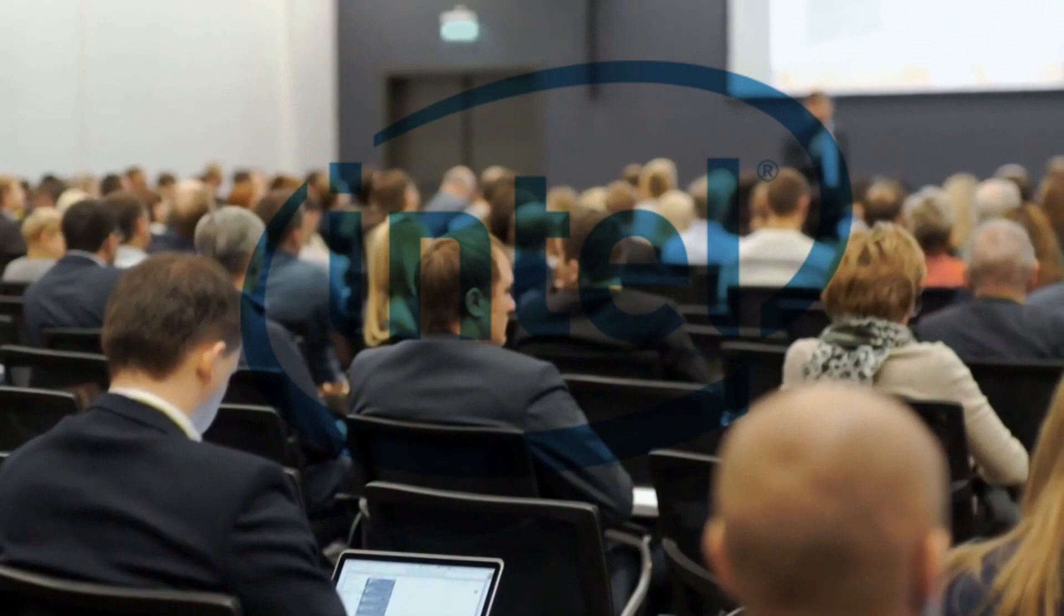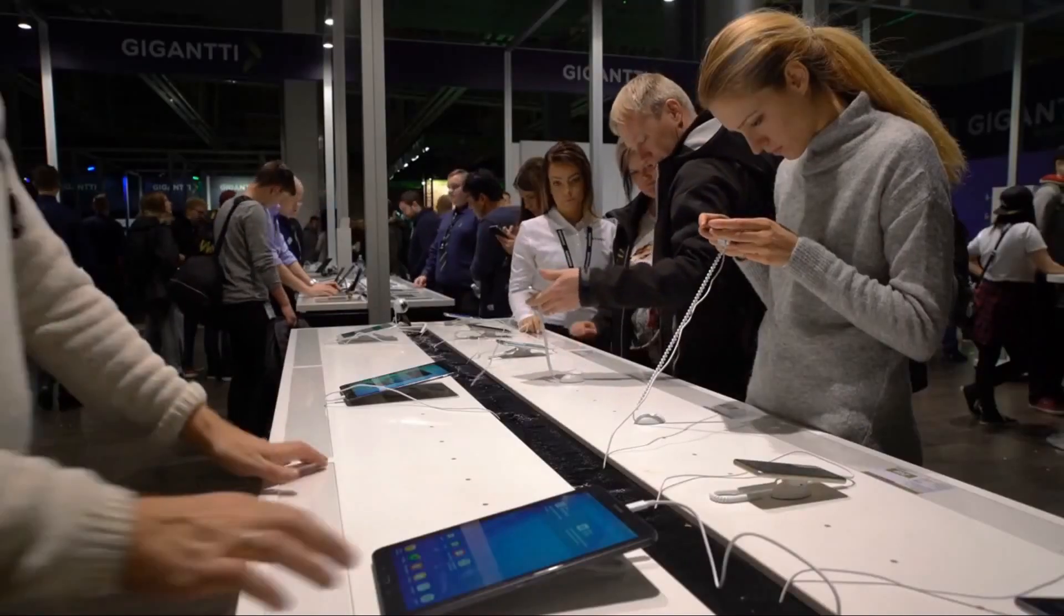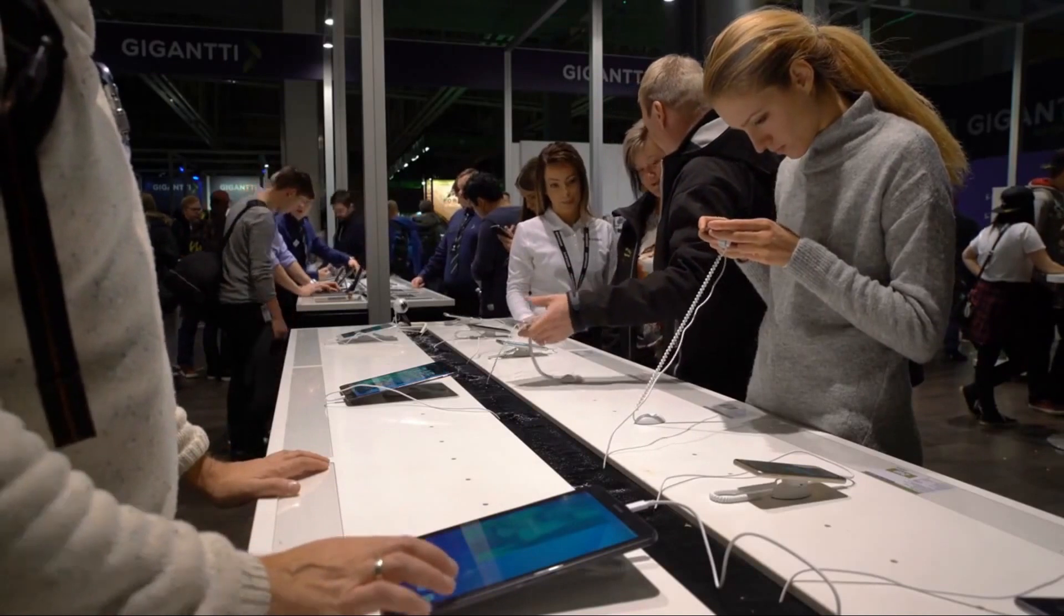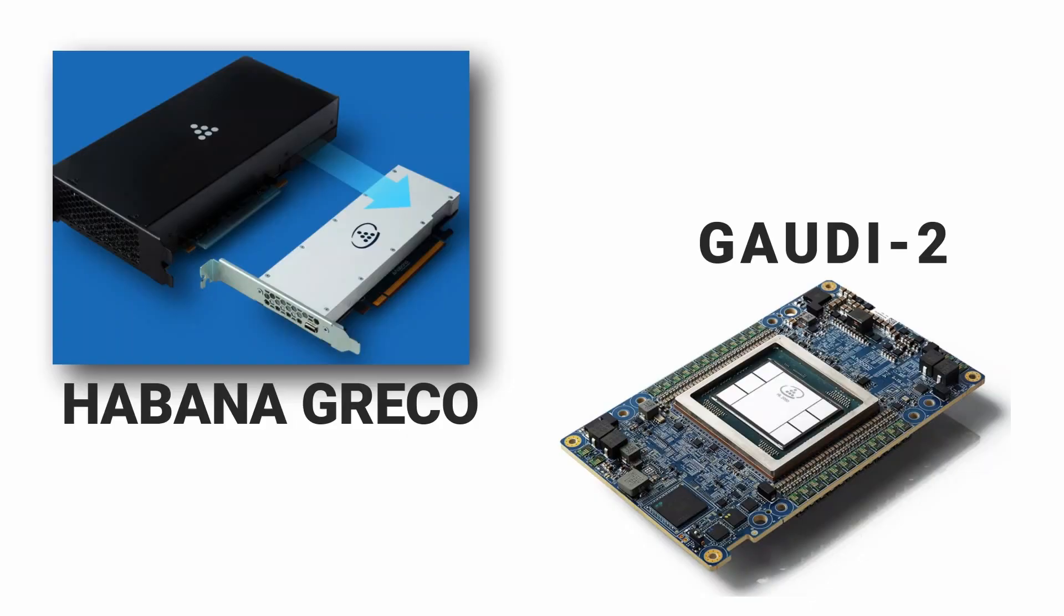Intel says that the processors offer significant speed-ups relative to their predecessors in the competition. Gaudi 2 processors are now available to Habana's customers, while Greco will begin sampling to select customers in the second half of this year.